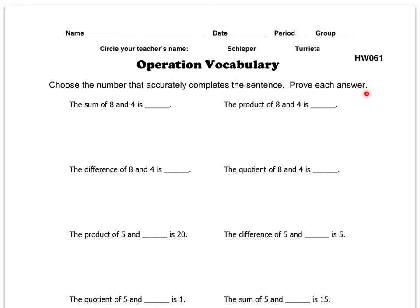That's what we call showing your work. So here we have the sum of 8 and 4 is, well, sum I know means addition. So 8 plus 4 equals 12. So that means that the answer is 12.